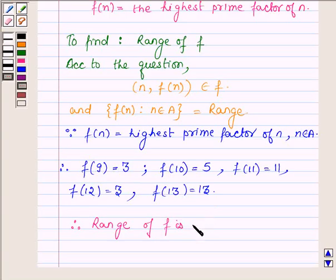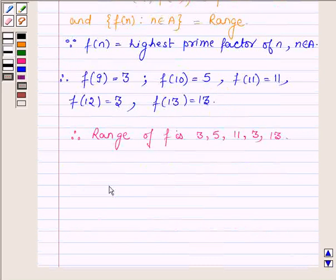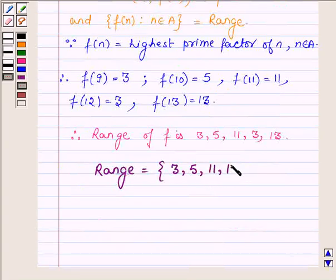Therefore, the range of f is all the images of elements of set A, which are 3, 5, 11, 3, and 13. Thus we can say that the range of the given function is {3, 5, 11, 13}. So this completes the solution. Hope you enjoyed it. Take care and have a good day.